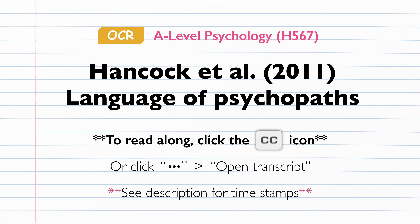Results: Overall, the participants produced over 127,000 words from all the interviews combined. It was found that those in the psychopath group averaged fewer words at just over 2,200, versus the non-psychopath group at just over 2,500 words, although this difference was not significant. Psychopaths produced approximately twice as many words relating to basic physiological needs such as food, drink, and money when describing their crimes, whereas non-psychopaths used a significantly higher number of words relating to social needs such as family, religion, and spirituality.